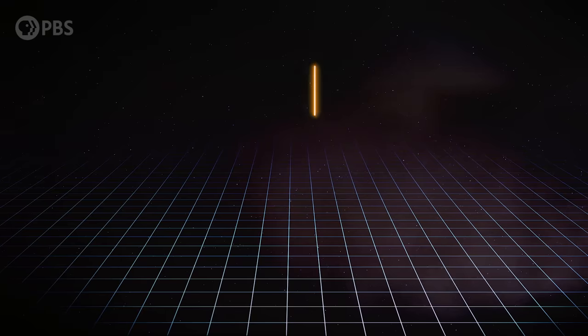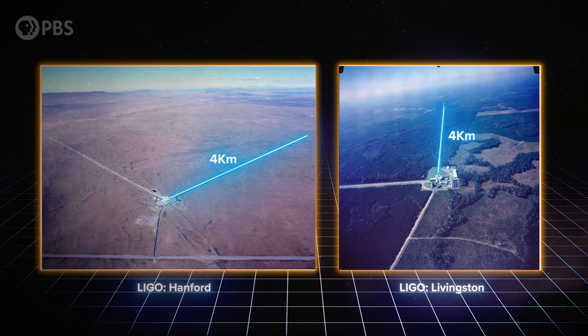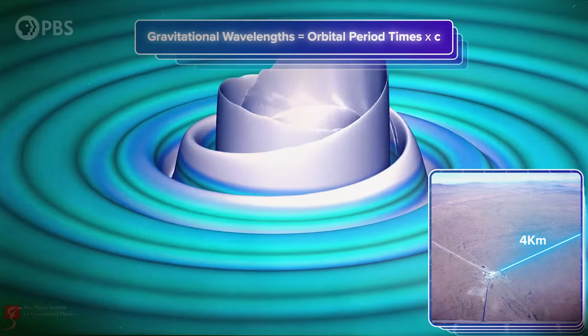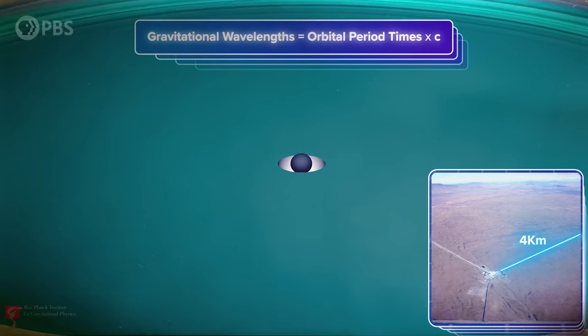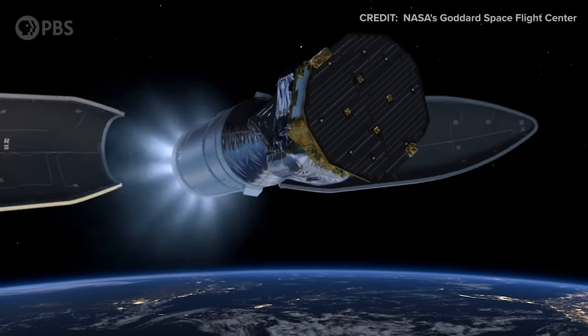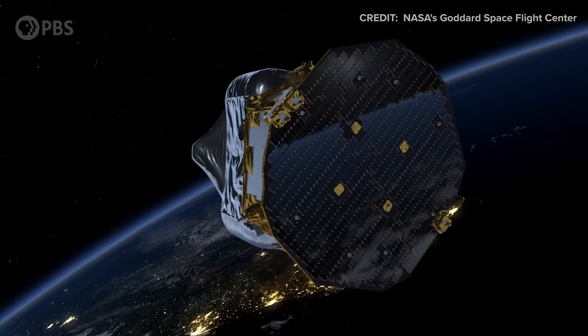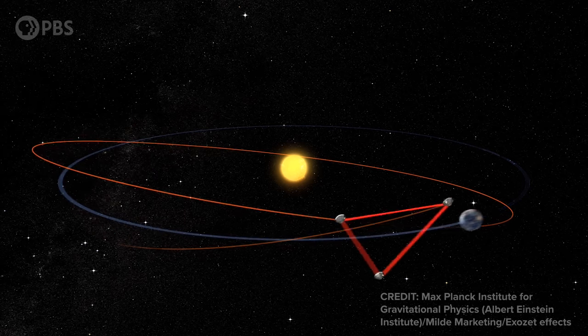As waves, gravitational waves have wavelengths. An observatory will be sensitive to wavelengths that have a similar size to its detector arm. In-spiraling stellar corpses generate wavelengths roughly equal to their orbital period times the speed of light — a few kilometers in the last seconds of that in-spiral. The larger the orbit, the longer the wavelength. Gravitational waves produced by binary stellar-mass black holes when they're further apart should be visible to LISA, the Laser Interferometer Space Antenna, with its 2.5 million kilometer arms of laser-connected spacecraft, at least after it launches.